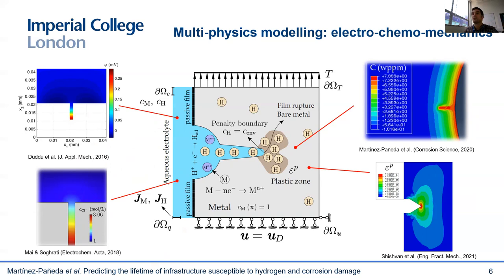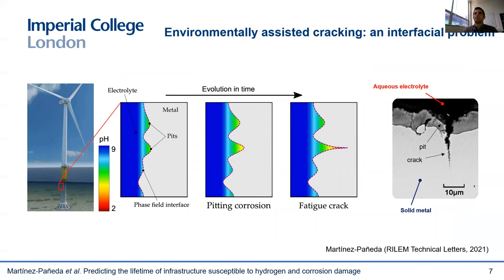But there's a second, arguably bigger challenge from the modeling perspective. Environmental assisted cracking phenomena are essentially interfacial problems. You can see in the slide an example of the different stages involved in the corrosion fatigue of wind turbine support structures. First, we have pits that nucleate at the seawater-metal interface. Then those pits grow, and eventually we see a pit-to-crack transition and the propagation of fatigue cracks. So the morphology of the interface is consistently evolving, and capturing this is key — not only because the chemistry is very different in an occluded environment such as inside a pit or a crack, but also because stages like the pit-to-crack transition are very sensitive to the interface shape.